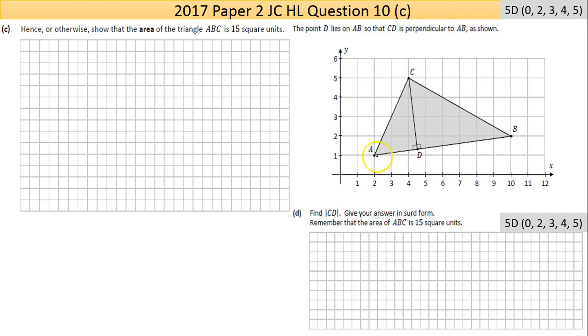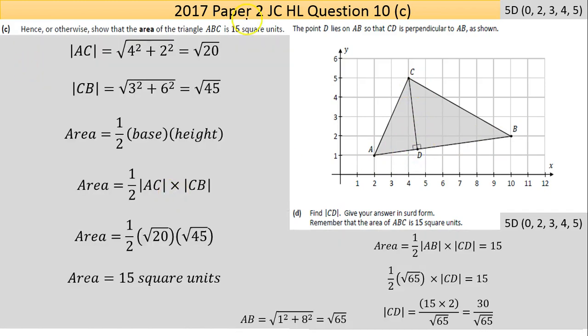A quicker way would be to use one-half base by height. If you have the base and can find the perpendicular height, happy days. The length of AC is the base. That's given by this triangle here with 2 on the base and 4 on the side, so I've used Pythagoras theorem to calculate the length of AC as square root of 20.